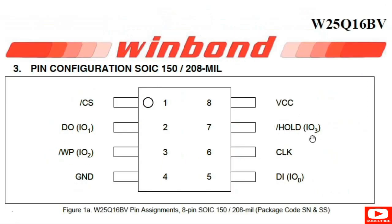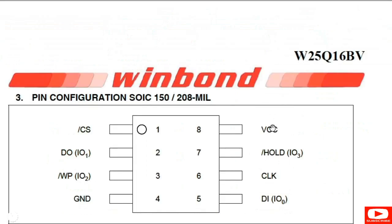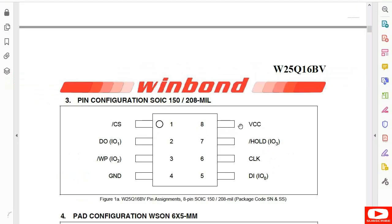Pin number seven is the hold, used for input/output. Pin number eight is VCC — the power for the BIOS. Always, for every 8-pin BIOS, pin number eight is for the power. If you want to check the VCC for a BIOS, check it on pin number eight. The power supply voltage is 3.3 volts — you should get 3.3V on pin number eight.